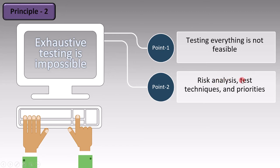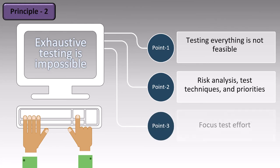We need to focus on what type of test techniques are needed and what are the priorities of different features. We can't just test everything; we need to prioritize certain parts based on how important they are. The final point is to focus test effort. When we're testing a feature, we need to know how much effort it requires. This is why exhaustive testing is impossible — testing everything is not feasible.